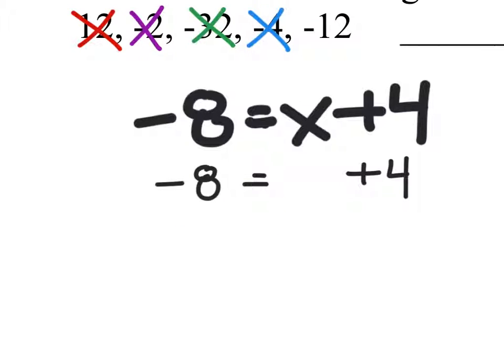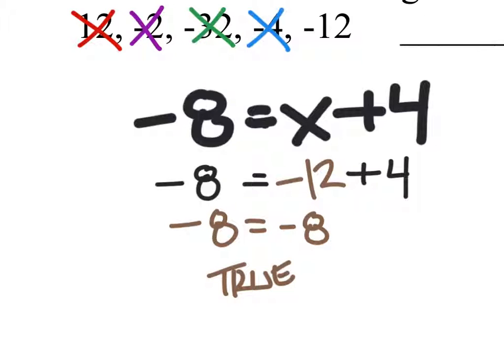And the final value we need to check is negative 12. So negative 12 plus 4 is negative 8. Does negative 8 equal negative 8? Yes, it does. That's true. So it looks like our only answer in this set is negative 12.